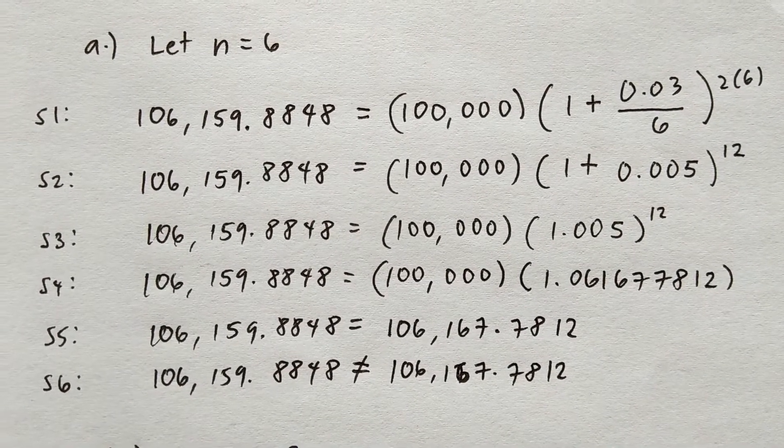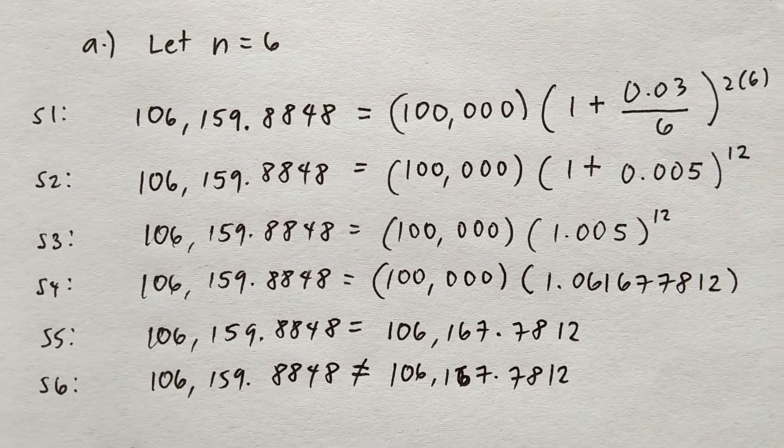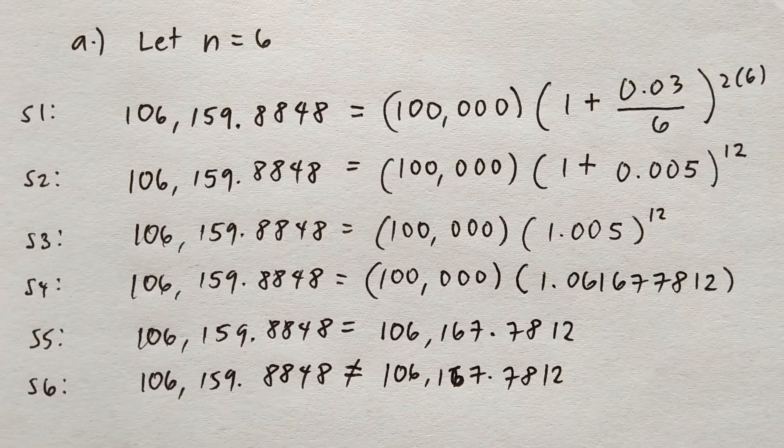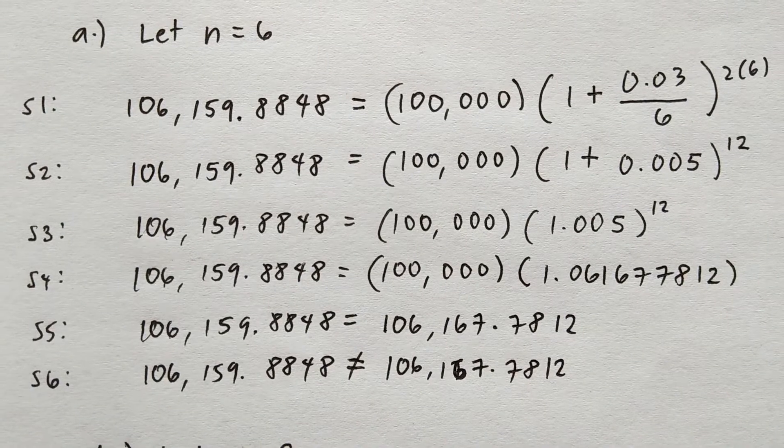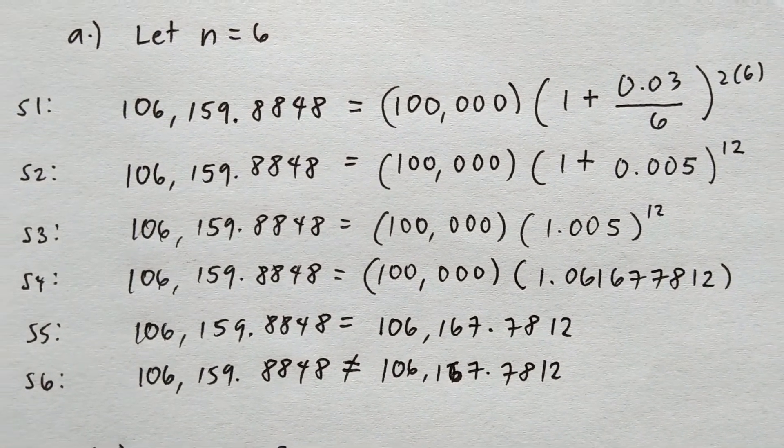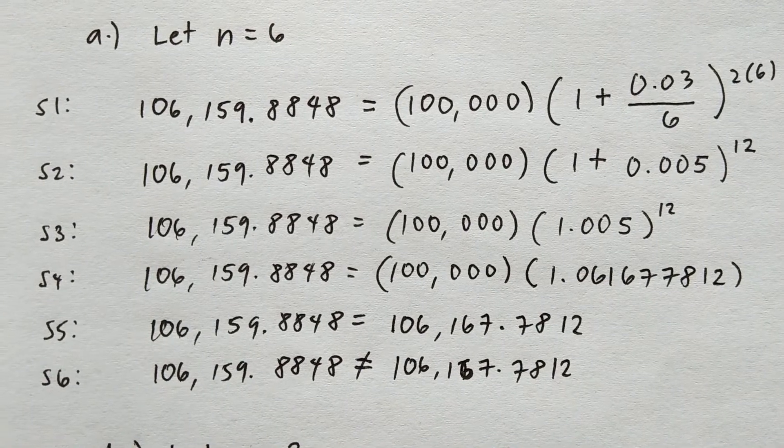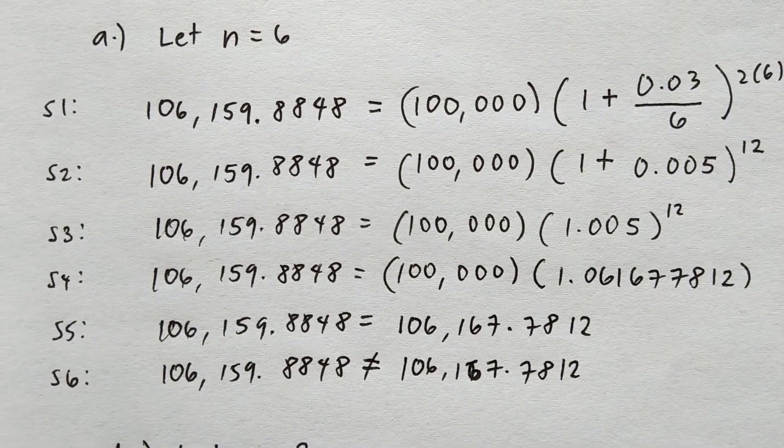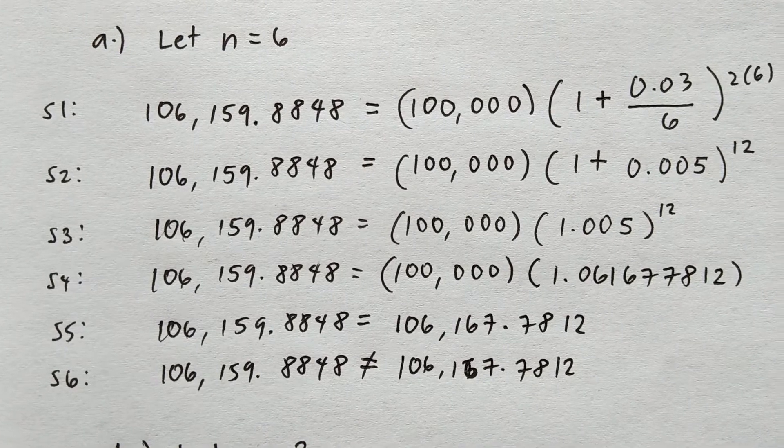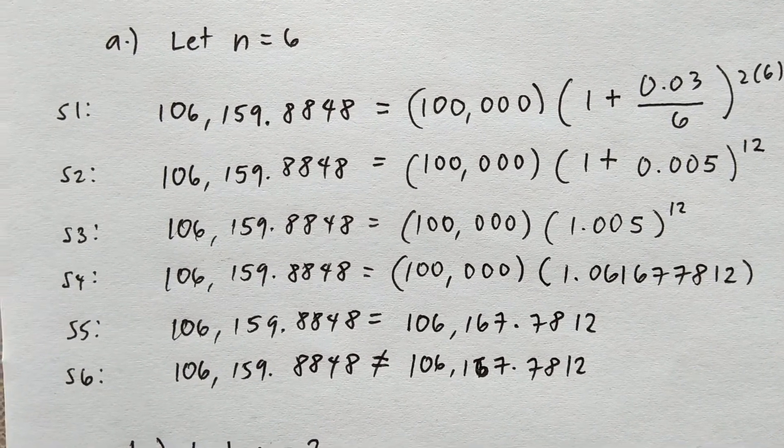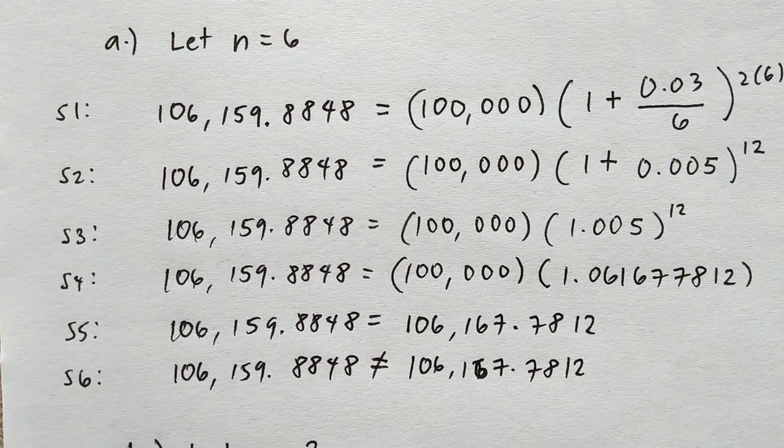In step 3, we have already added the number 1 and the quotient 0.005. Notice that from step 1 to step 3, 100,000 is not affected, it is maintained. In step 4, by using our scientific calculator, we're able to express 1.005 raised to the power of 12 into a single number: 1.061677812.